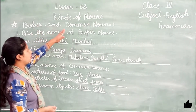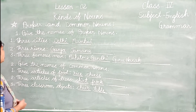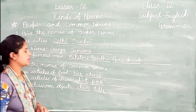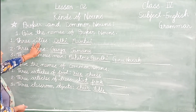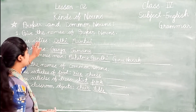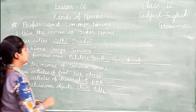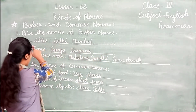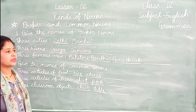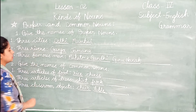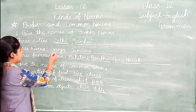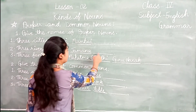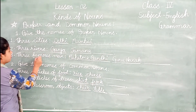Now let's try the proper and common noun exercise. Give the proper names of three cities — first city, second Mumbai, third one more. Give the proper names of three rivers — first river, second Jamuna, third another river. Give the names of three famous men — first Mahatma Gandhi, second Guru Nanak, third another person.